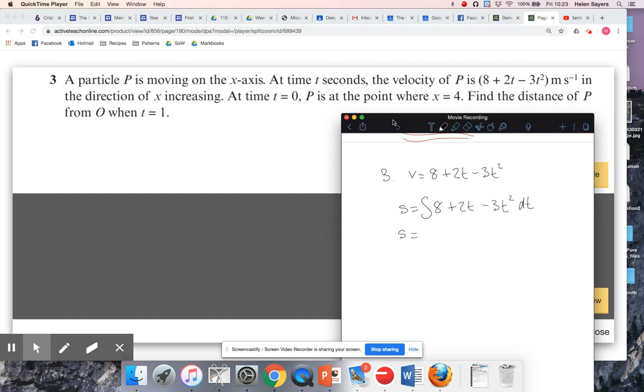So eight is going to integrate to eight T. Two T, well, the T is going to integrate to T squared, and then I'm going to divide by two. So as there's already a coefficient of two there, I'll just be left with T squared. That's going to integrate to T cubed. So when I divide by three, that's going to cancel the three that's already there, and I mustn't forget my plus C.